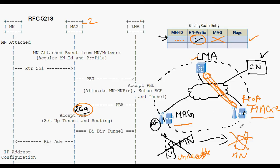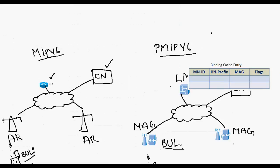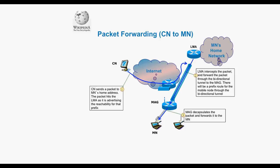This covers registration and deregistration when a mobile node moves between access routers or leaves the Proxy Mobile IPv6 domain. The question remains: why do we need a bidirectional tunnel, and how does the correspondent node keep the connection active after the mobile node changes access routers? Any packet the mobile node sends to the correspondent node will be received by the mobile access gateway, which sends the packets through the bidirectional tunnel to the local mobility anchor.